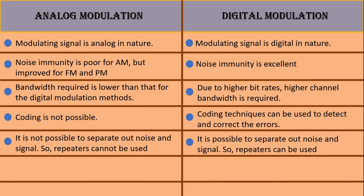Fourth, coding is not possible for analog modulation, but in digital modulation coding techniques can be used to detect and correct errors. Fifth, in analog modulation it is not possible to separate noise from the signal, so repeaters cannot be used.